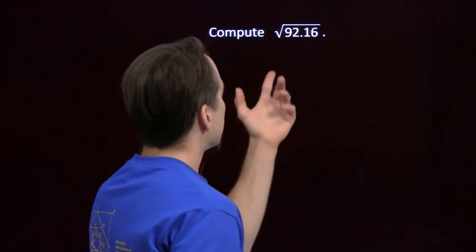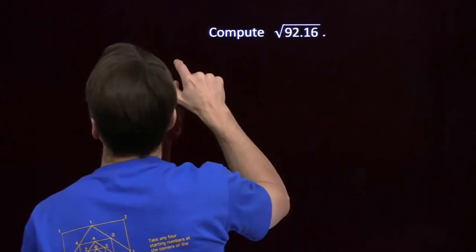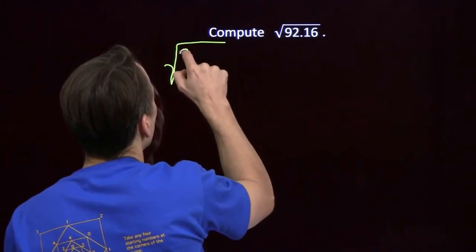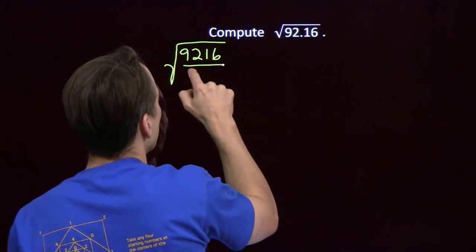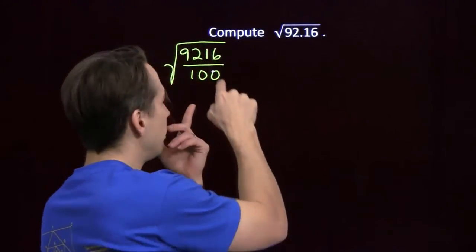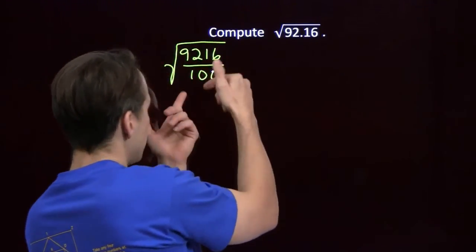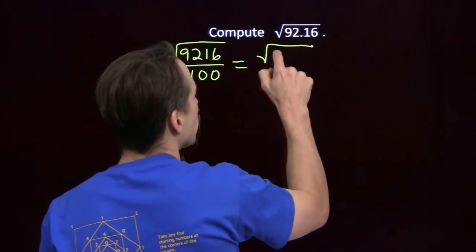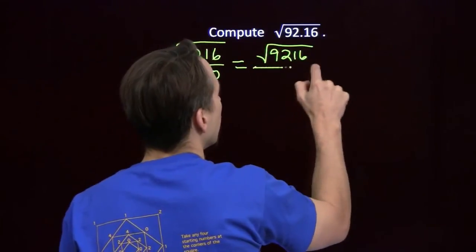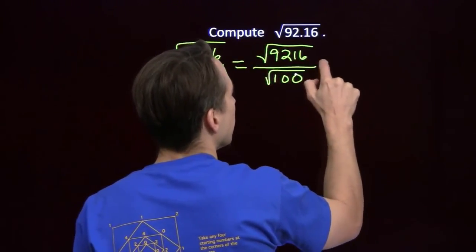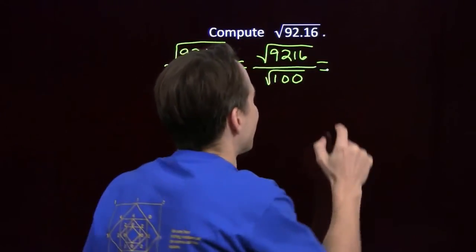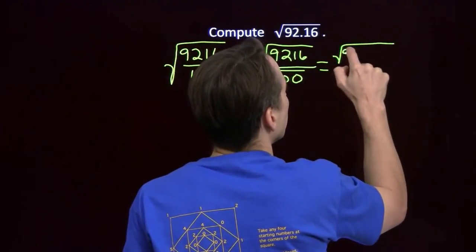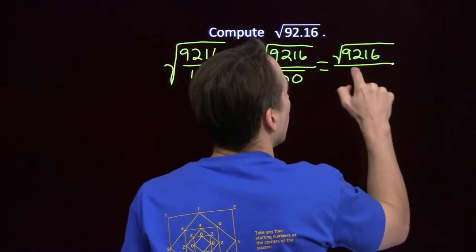We've got one more — this time a square root of a decimal. I don't know how to handle decimals, but I do know how to handle fractions. So I'm going to convert: write this as the square root of 92.16 over 100. Dividing by 100 moves the decimal place over 2, so this does equal 0.9216. We can take the square root of this quotient and write it as a quotient of square roots. The square root of 100 is just 10, so we get the square root of 92.16 over 10.